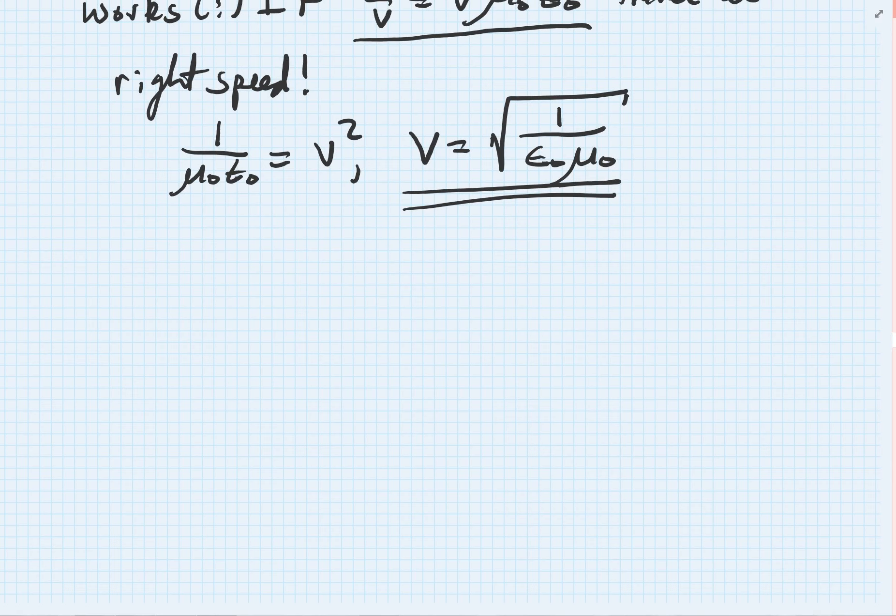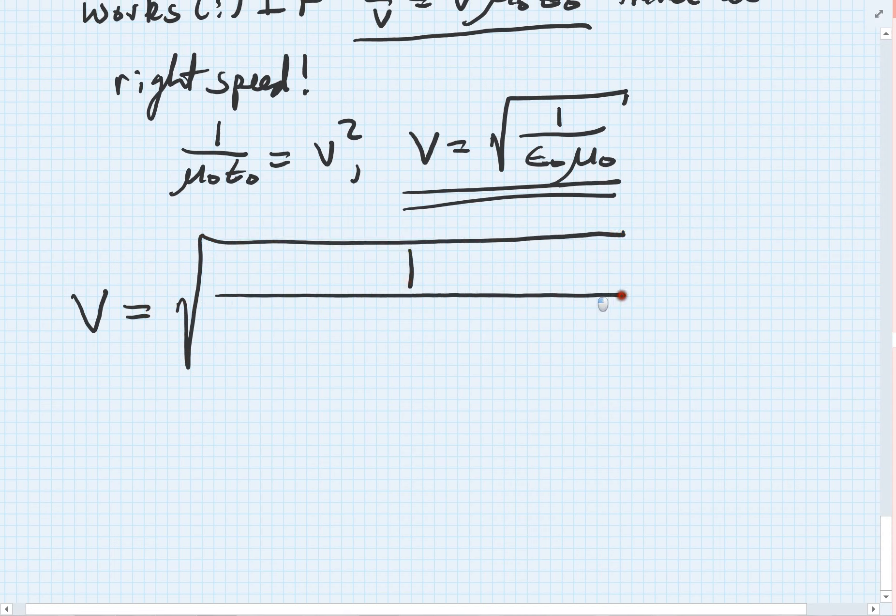Let's go ahead with our calculations. v equals the square root of 1 over, now we have to remember what our various quantities are.